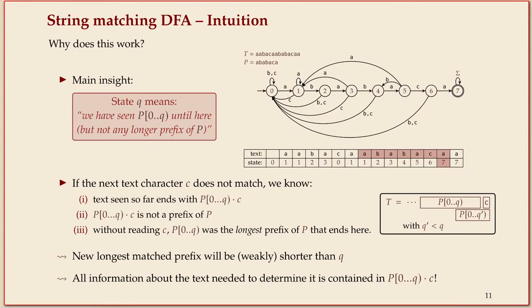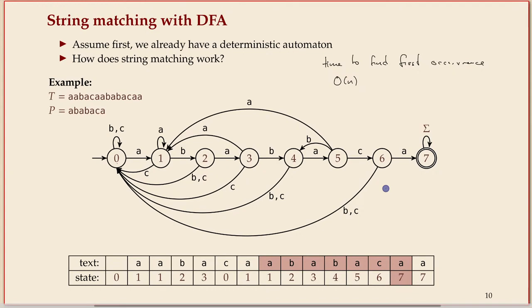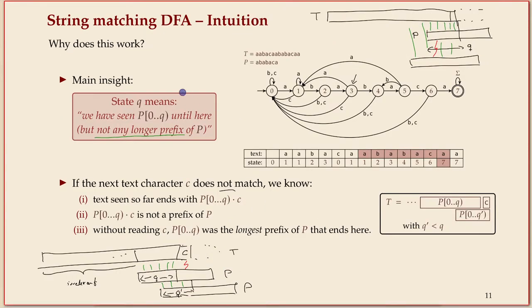This argument is also the correctness proof of the string matching procedure. The easy bit: when you reach state seven, the accepting state, you found a pattern occurrence because you walked along that path. The more tricky bit is arguing that if you're not there, you haven't found one. You prove by induction that this invariant is always maintained — if you never reach state m through the text, you've never seen the entire pattern.